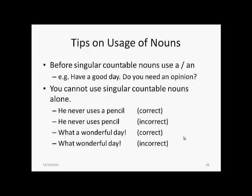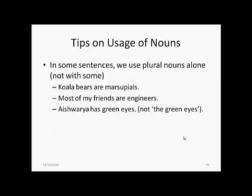Before singular countable nouns, we use the articles a or an. For example, 'have a good day' or 'do you need an opinion?' But you cannot use singular countable nouns alone. So we do not say 'he never uses pencil' — we have to use the article a and write it as 'he never uses a pencil.' Similarly, we do not say 'what wonderful day'; the correct usage would be 'what a wonderful day.' In some sentences, we do use plural nouns alone and not with the word some. For example, 'koala bears are marsupials,' 'most of my friends are engineers,' 'Aishwarya has green eyes' — we do not say 'Aishwarya has the green eyes.'